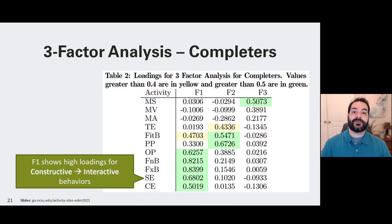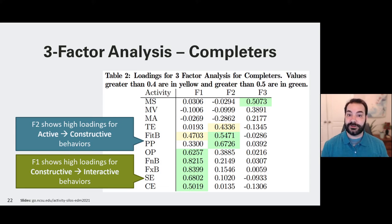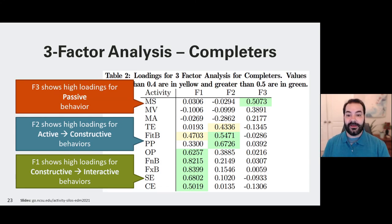To start our three-factor analysis with completers, our F1 score shows heavy loadings to constructive and interactive behaviors. Our F2 is showing heavy or high loadings to active and constructive behaviors. And finally, our F3 is showing high levels of passive behaviors. This is very similar to what we were seeing in our activity sequence diagram. And so, this is why we went with increasing our factor analysis.